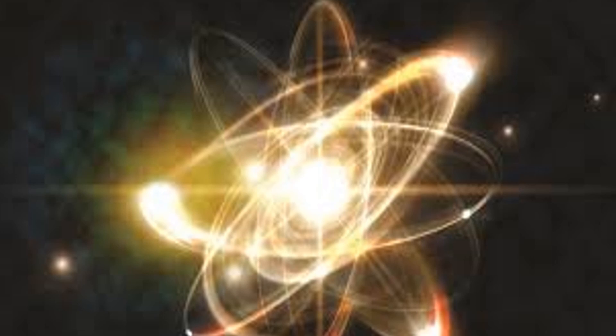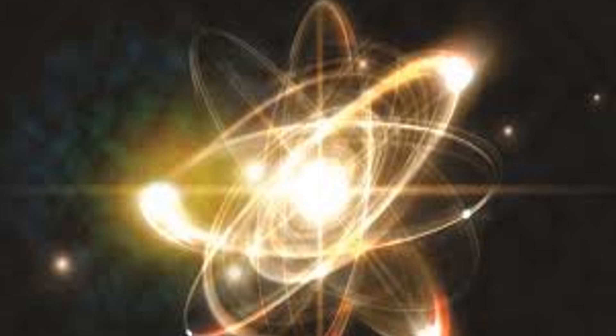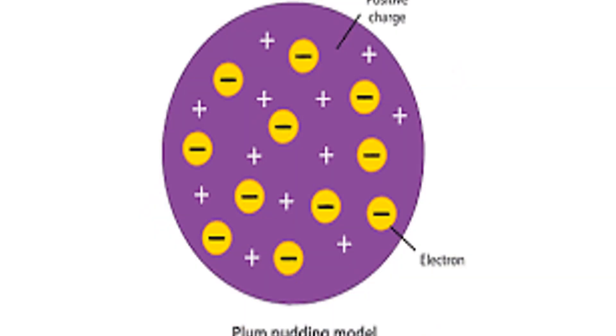Since it was known that there are two types of charges, and that the atom was electrically neutral, then atoms had to contain equal numbers of these charges in order for their effects to cancel. But how these charges were arranged inside the atom was a mystery. So Thomson proposed his plum pudding model of the atom, which was generally accepted for many years before Rutherford.